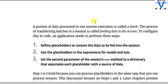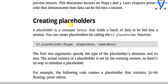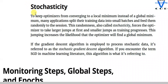We know what a placeholder and variable are, so we are going to move into stochasticity to keep the optimizer from converging to a local minimum instead of the global minimum. Many applications split training data into small batches and feed them randomly to the session. Randomness, also called stochasticity, forces the optimizer to make larger jumps at first and smaller jumps as training progresses. This increases the likelihood that the optimizer will find a global minimum. If gradient descent is employed to process stochastic data, it is referred to as stochastic gradient descent — SGD.